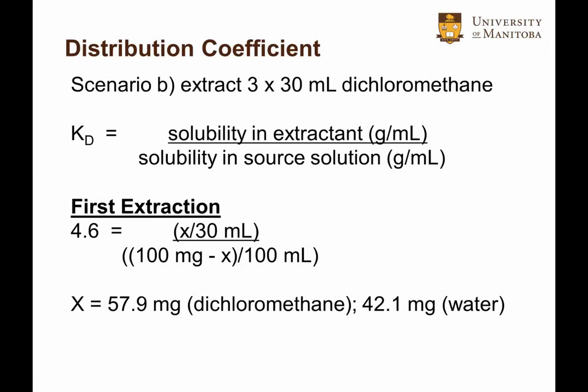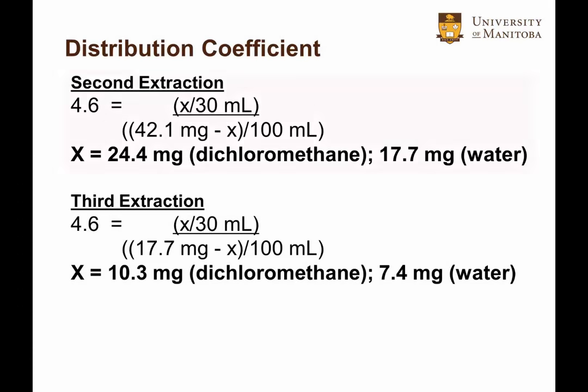Now in contrast, what happens when we use more frequent small volumes of dichloromethane? So in the first extraction, and setting up the equation just like in the first example, we pull out 57.9 milligrams of caffeine in the organic layer, and 42.1 milligrams remains in the aqueous layer. Then on the second extraction, we have to remember that 42.1 milligrams of caffeine remains in the aqueous layer. So we need to use 42.1 minus X, and not 100 minus X. In working out the math, we pull out 24.4 milligrams, and leave behind 17.7 milligrams in the aqueous layer. Finally, in the third extraction, we remove 10.3 milligrams and leave behind 7.4 milligrams in the aqueous layer.